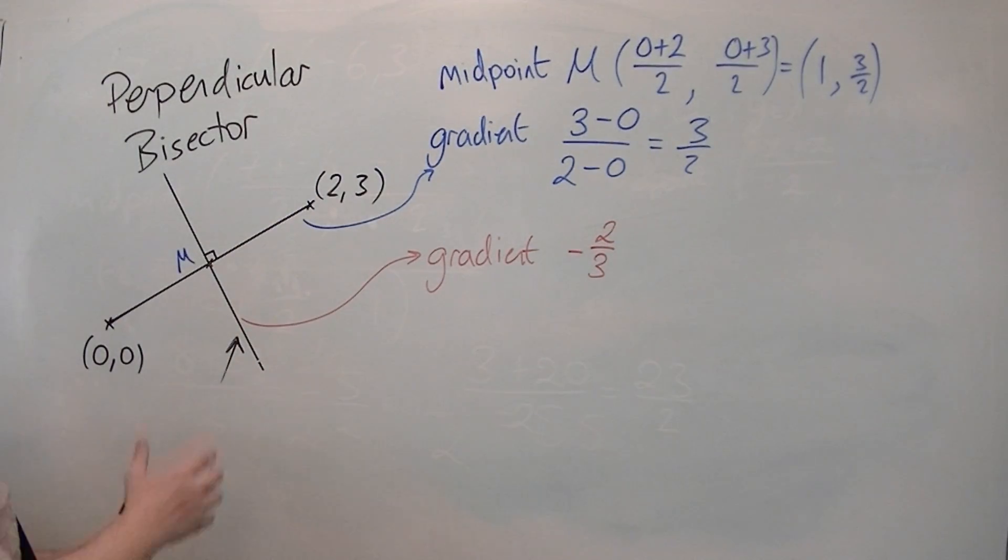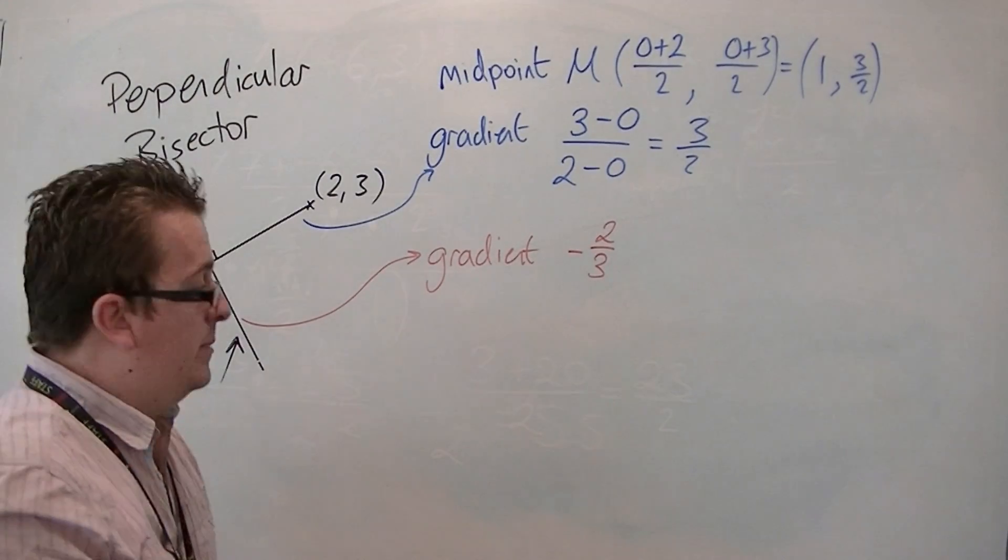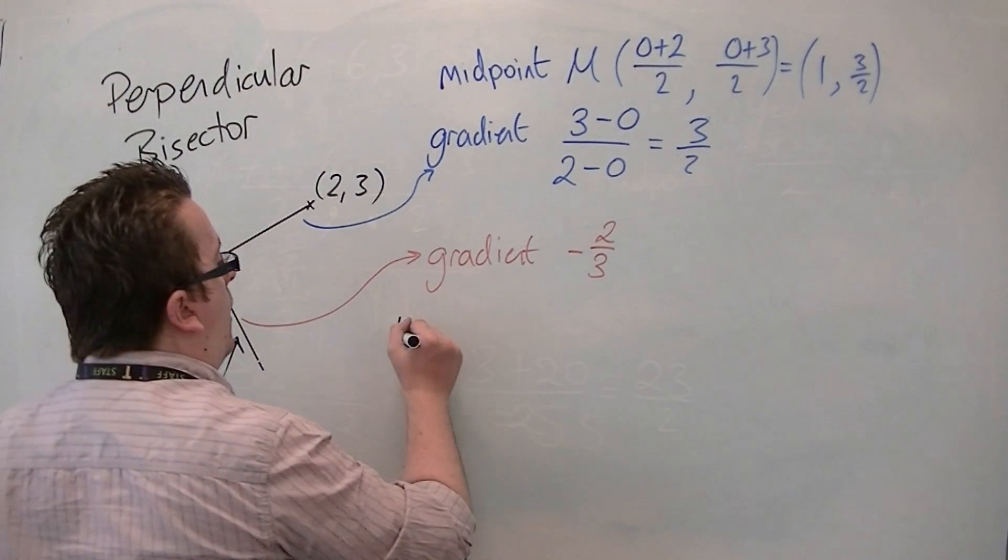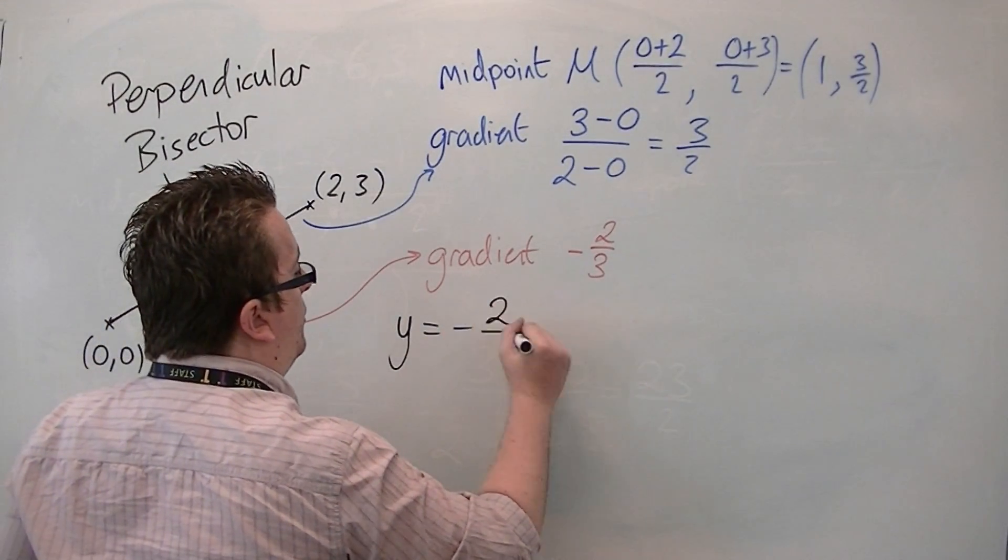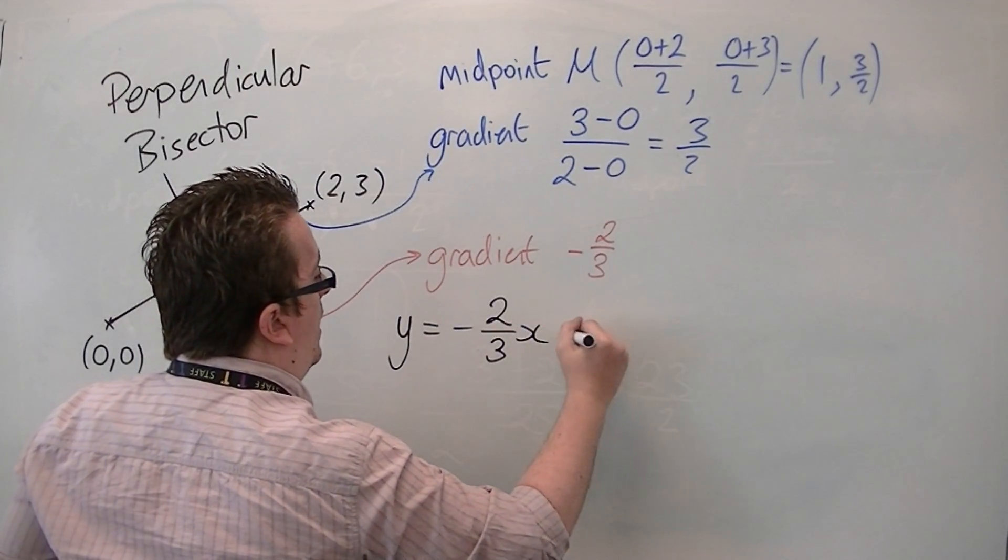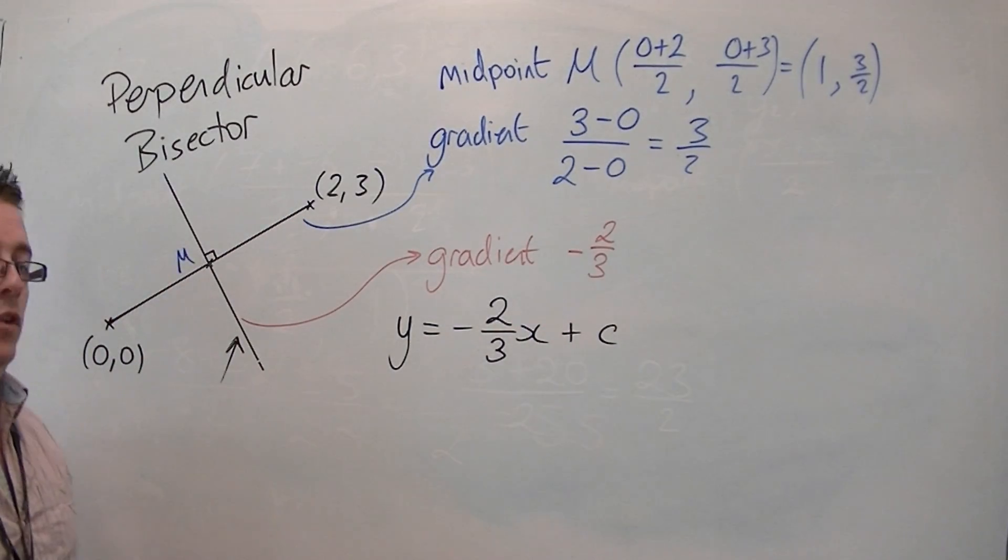So, I know that the equation of the perpendicular bisector is y equals minus 2 thirds x, plus a constant c, that I need to find.